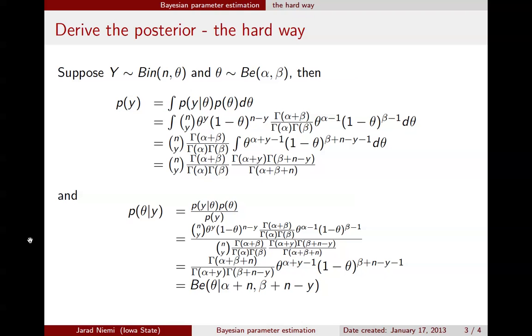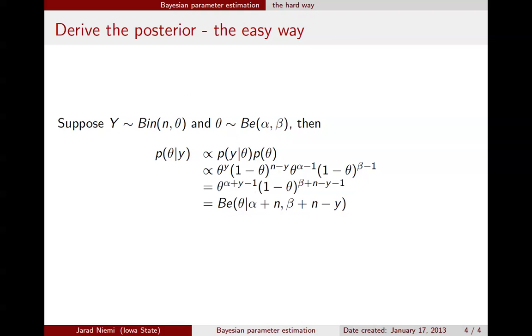So that's the hard way, certainly not the recommended way. The recommended way is this, the easy way, where we use that proportionality constant to drop everything that does not involve theta.